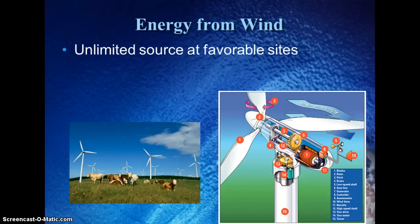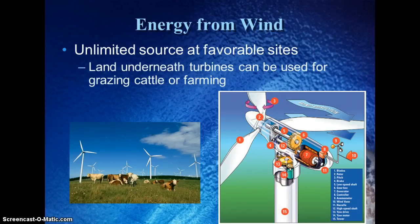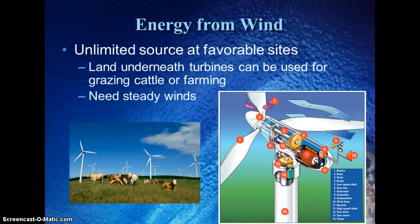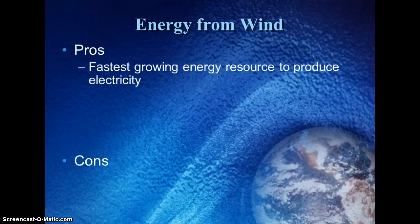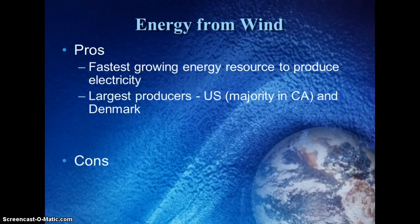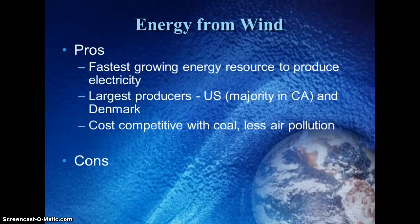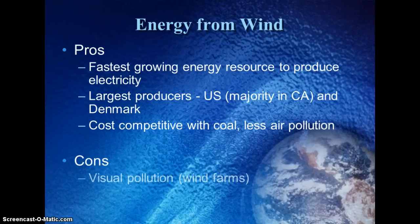Another renewable energy source that is essentially unlimited if you find a good location is wind, using wind turbines. One benefit is that land at the base of the turbines is still useful — farmers are often paid to host wind turbines while still using their land. You need an area with constant, steady winds. Wind is a very fast-growing energy resource, and the U.S. and Denmark are the two leading producers. It's cost-competitive with coal, and of course you don't have the pollution associated with burning coal.